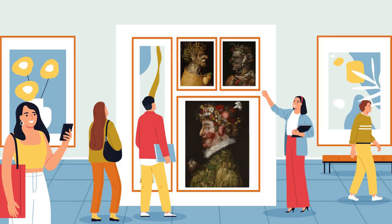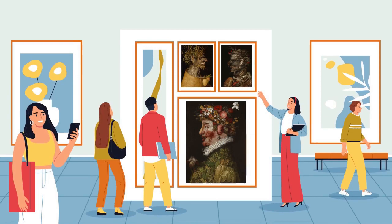Giuseppe Arcimboldo was born in 1526 in Milan, Italy. He was an Italian painter known for his imaginative and unconventional approach to art, creating unique and fantastical portraits that captivated audiences during the Renaissance period.